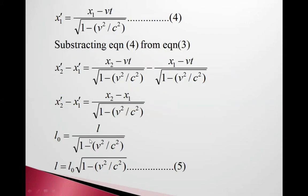We have written L upon square root (1 minus V squared upon C squared). So L equals L0 times square root (1 minus V squared upon C squared), equation 5.